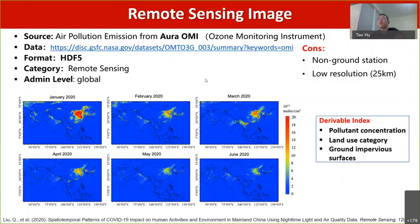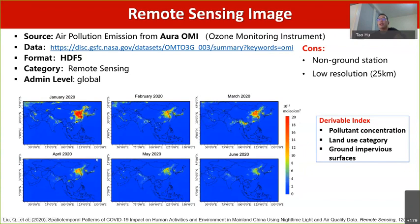Another very interesting and important dataset is remote sensing images. Remote sensing images are usually collected from satellites using different instruments or sensors. Different instruments or sensors on a satellite have different applications and different uses. For example, this satellite is used to monitor the ozone.